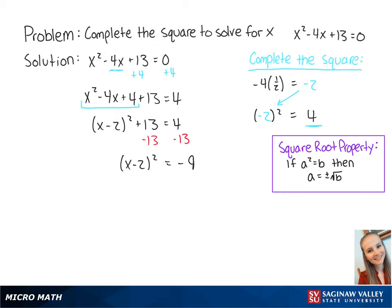Using the square root property, we make this equal to x minus 2 equals plus or minus the square root of negative 9.